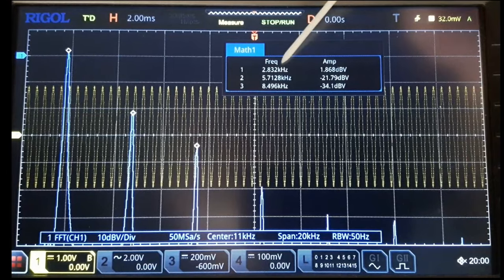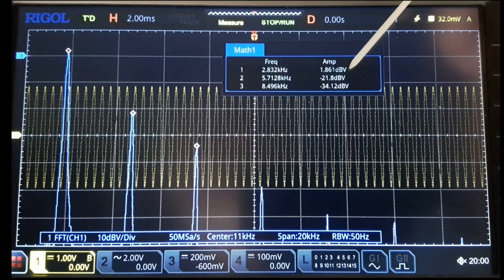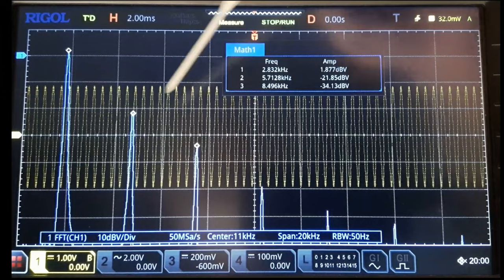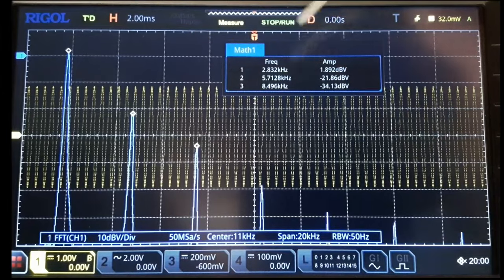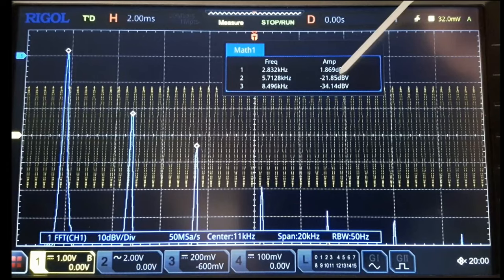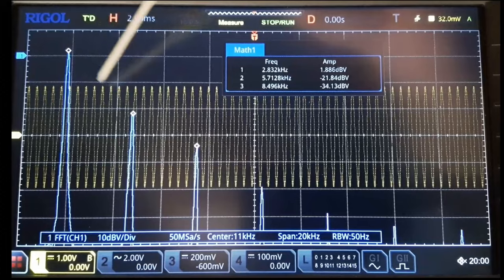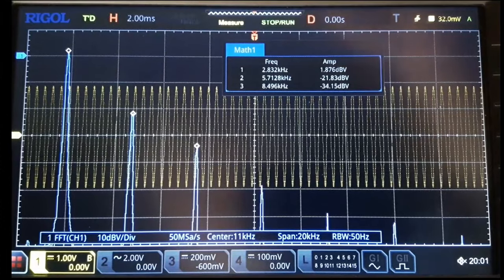We're looking at the levels here. We have our fundamental 2.8 kHz at about, let's call it plus 2 dBV. And we've got our second harmonic here at about minus 22. So there's about 24 dB of difference between the fundamental and the second harmonic. So 24 dB.